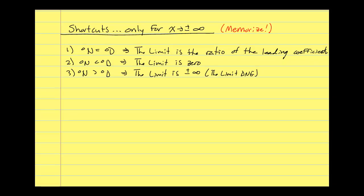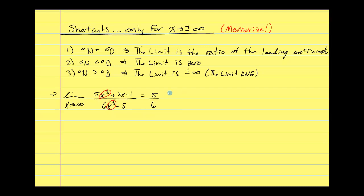Let's look at a few quick problems now that we know the shortcut rules. The limit as x approaches infinity of 5x cubed plus 2x minus 1 over 6x cubed minus 5. Right away I note that the degree in the numerator and denominator — the highest powers — are the same. So my limit is just the ratio of the leading coefficients: 5 over 6. Justification: the degree in the numerator and denominator are the same. This also implies a horizontal asymptote at y equals 5 sixths.